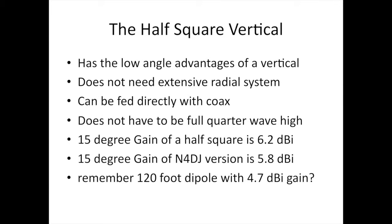The half square is not your conventional vertical. It has the low angle advantages of a vertical. It does not need an extensive radial system. It can be fed directly with coax. It does not have to be a full quarter wave high. The 15 degree gain of a half square is 6.2 dBi. The 15 degree gain of my version is 5.8 dBi. Remember, the 120 foot dipole has a gain of 4.7 dBi.